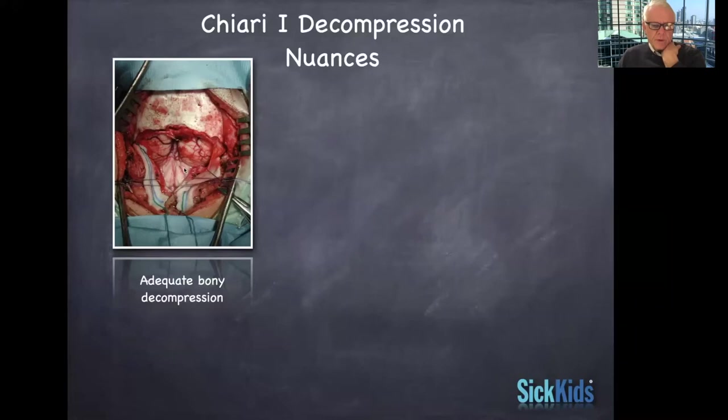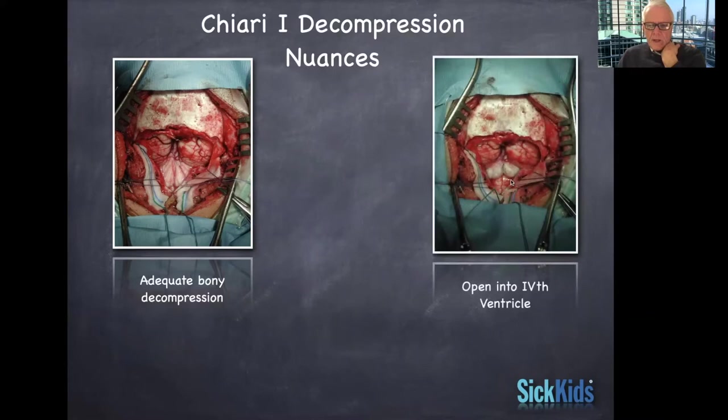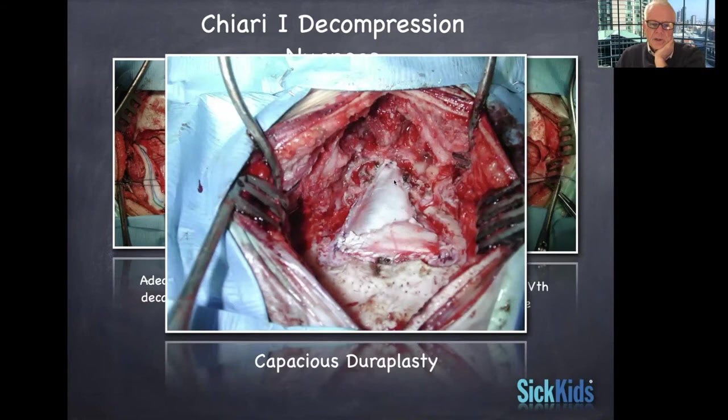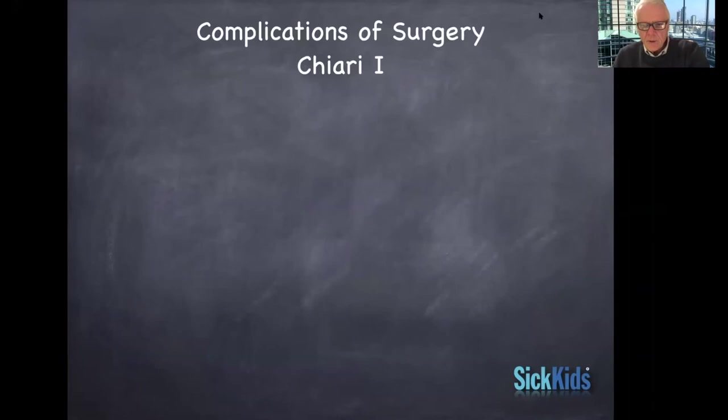The occipital bone has been removed, the dura has been opened — you can see the cerebellar hemispheres and the tonsils. You need to open up into the area of the fourth ventricle by going in the midline between the cerebellar tonsils to make sure the obex is exposed. At the end you do a duraplasty: you put a patch in and sew it in place, ensuring ample decompression. This is the tried and true, standard method.